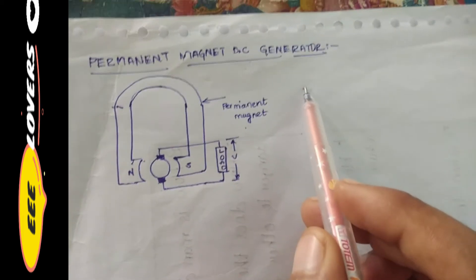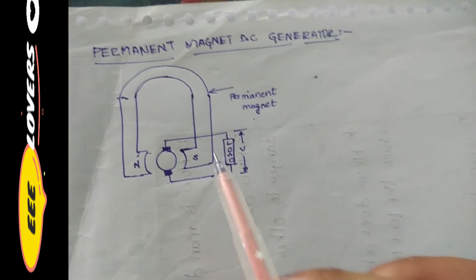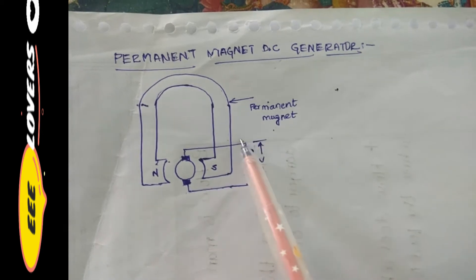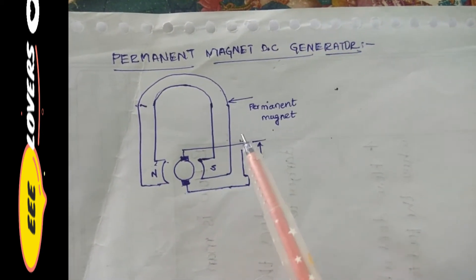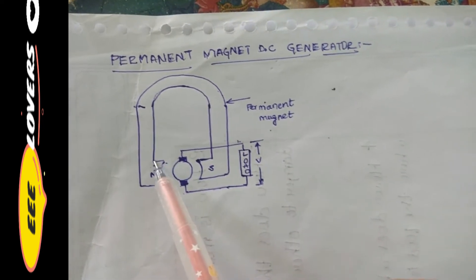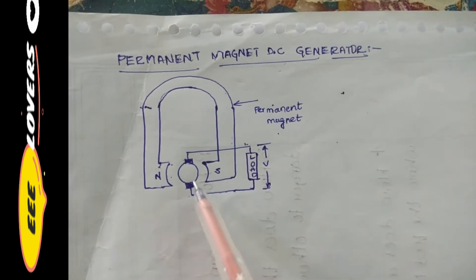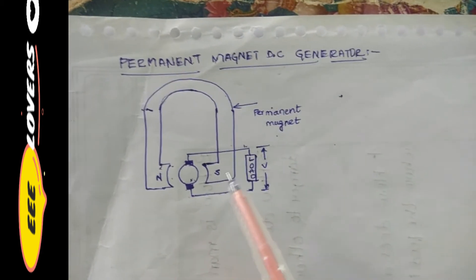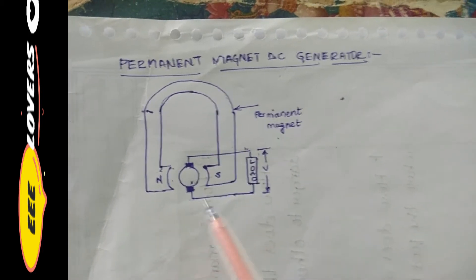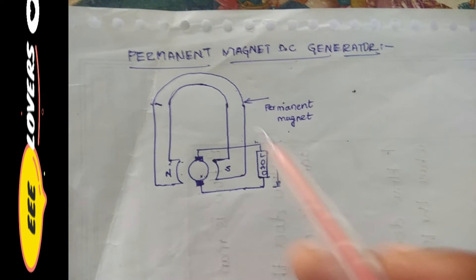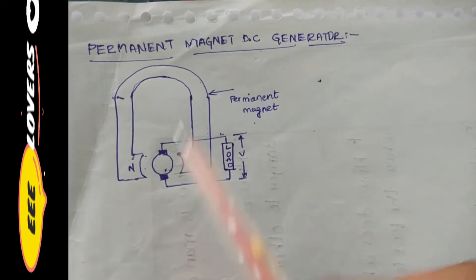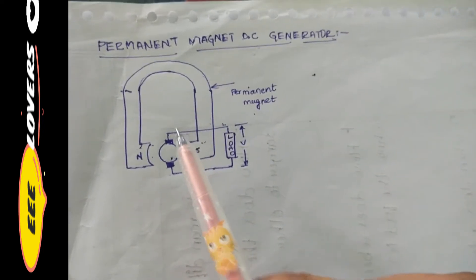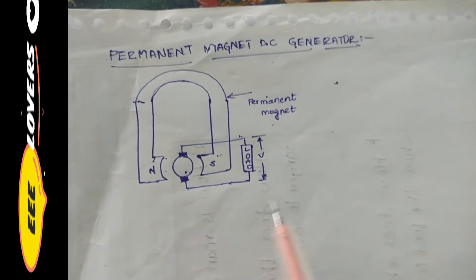In the permanent magnet DC generator, the flux is produced by a U-shaped permanent magnet. The permanent magnets are fixed to the yoke. The armature rotates by means of a prime mover in the magnetic field. These are mainly used in small generators, particularly in the case of gas, oil, and petrol engines.